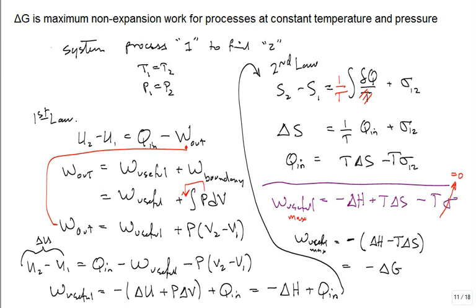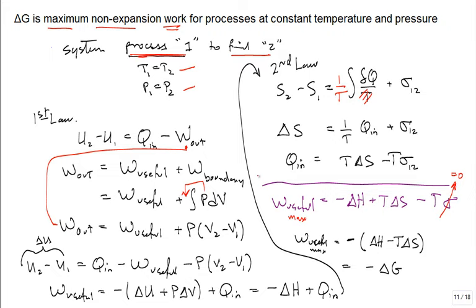Here's the derivation — I'll outline it. We have all the tools. When we have a process from state 1 to state 2 at constant temperature and pressure, we're interested in getting maximum non-expansion work. Think about boundary work and shaft work — we want to exclude the boundary work. The non-expansion work is the shaft work we want to focus on. So we write the first law of thermodynamics.